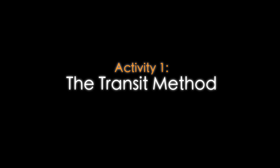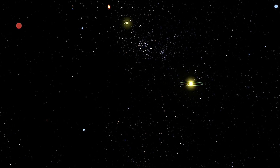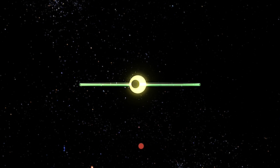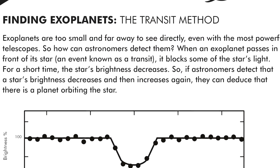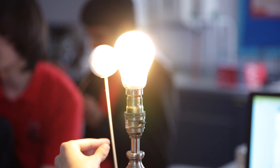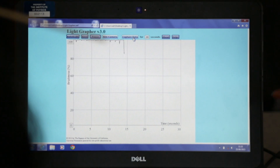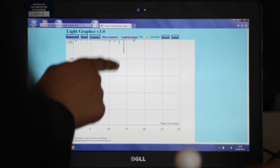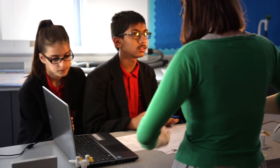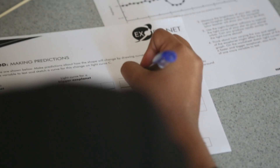In the first activity, students investigate how astronomers can detect planets that are too far away to image with a telescope. They model a planetary transit and use a webcam connected to a laptop to produce a light curve, and then predict how the curve will change for a bigger and faster planet.